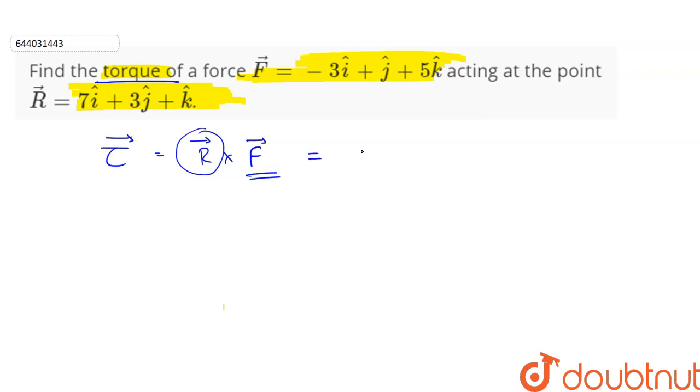Therefore this is equal to 7i cap plus 3j cap plus k cap cross minus 3i cap plus j cap plus 5k cap.